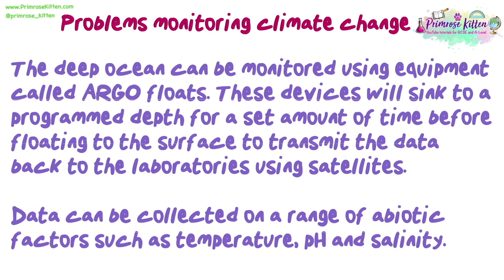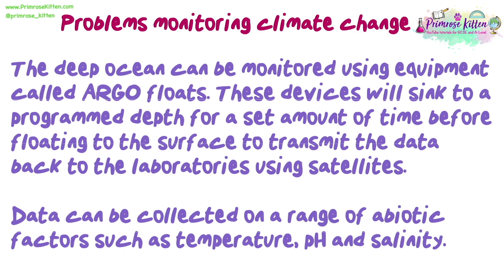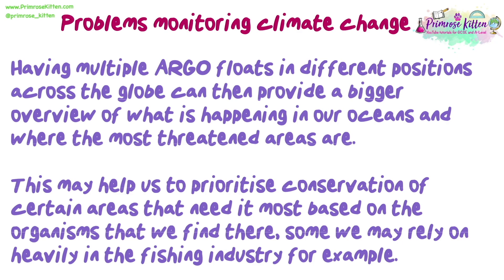Data can be collected on a range of abiotic factors such as temperature, pH, and salinity. Having multiple Argo floats in different positions across the globe can then provide a bigger overview of what is happening in our oceans and where the most threatened areas are. This may help us to prioritise conservation of certain areas that need it most based on the organisms we find there — some of which we may rely on heavily in the fishing industry, for example.